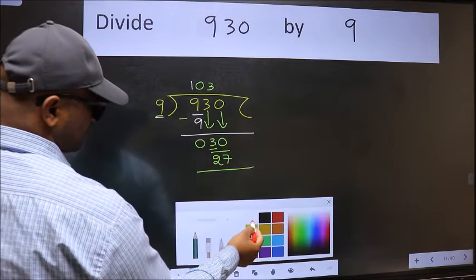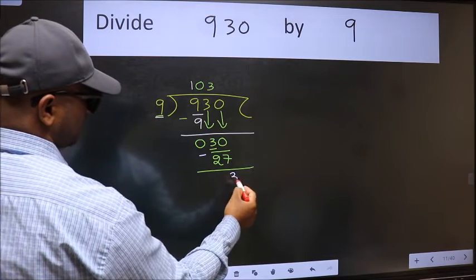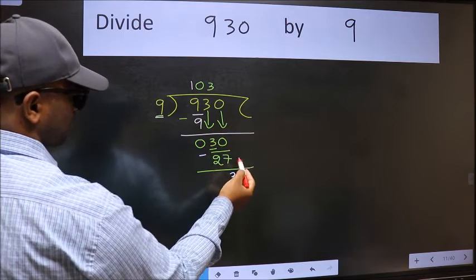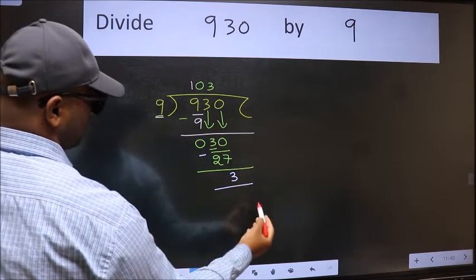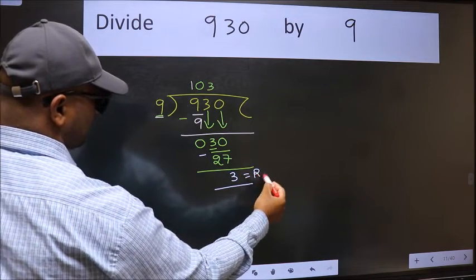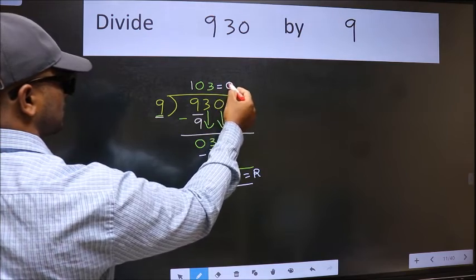Now we should subtract. We get 3. No more numbers to bring down. So we stop here. This is our remainder and this is our quotient.